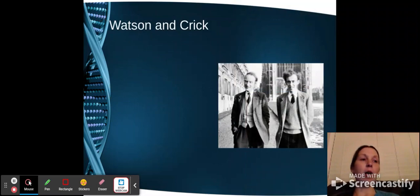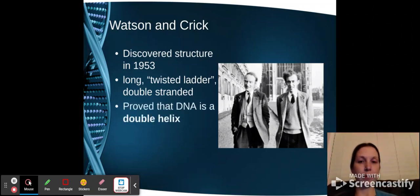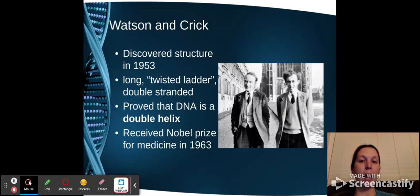The main two people that are credited when it comes to the structural idea of what we think DNA is are Watson and Crick. And they discovered the structure in 1953, and they called it a twisted ladder. So it's double-stranded, and it's got that double helix shape where it continues to twist around, almost like a spiral staircase. And because of this, they actually won the Nobel Prize for Medicine in 1963.